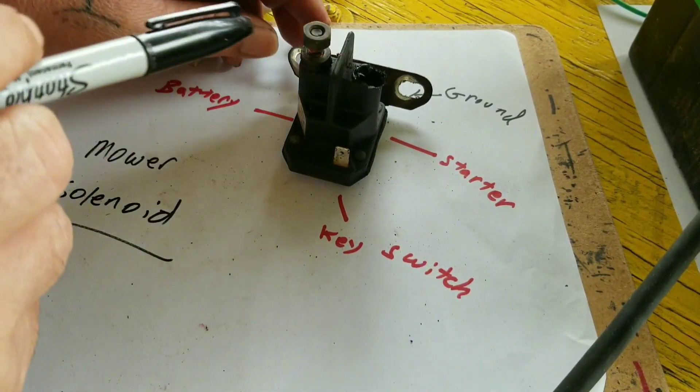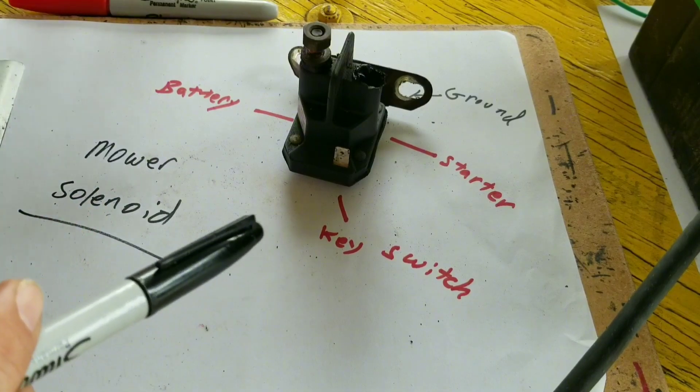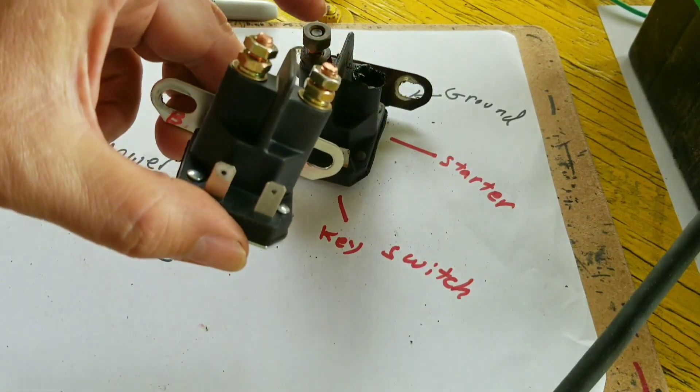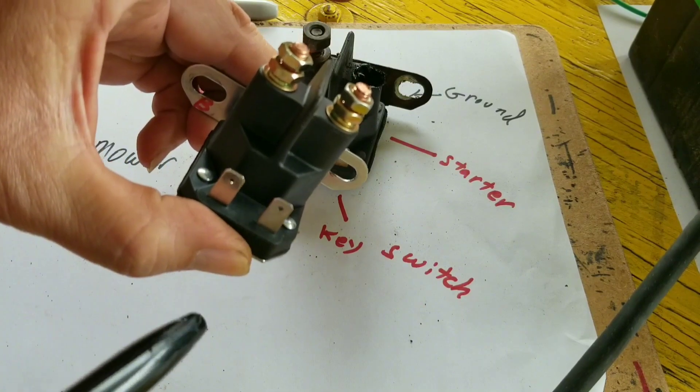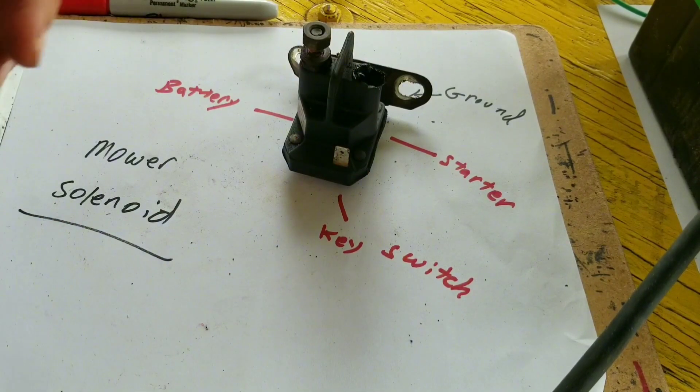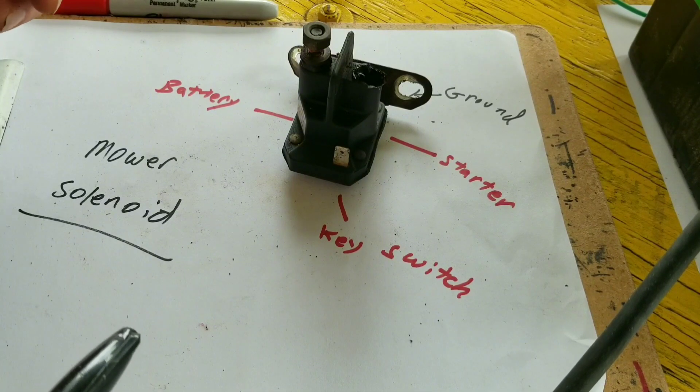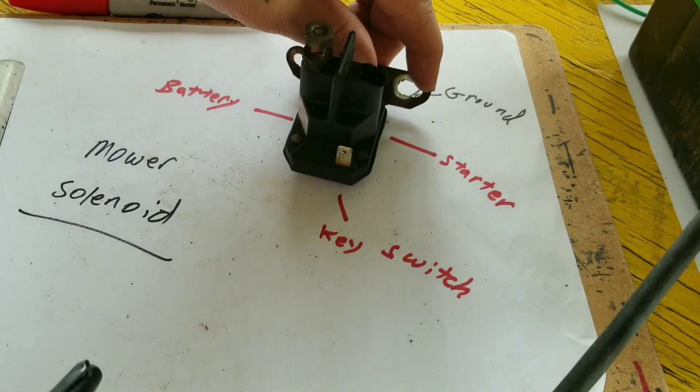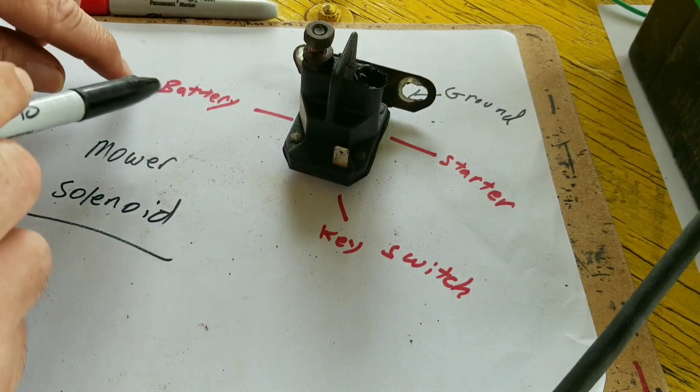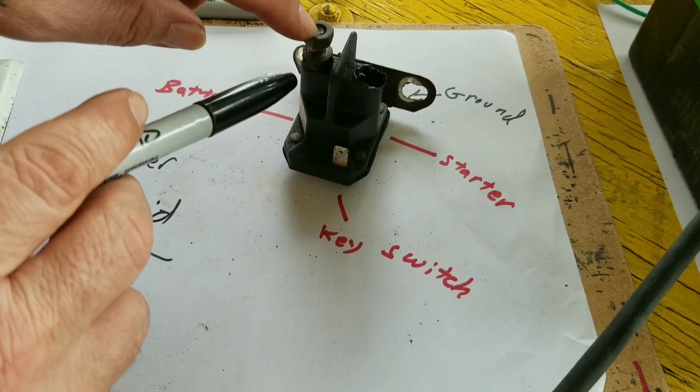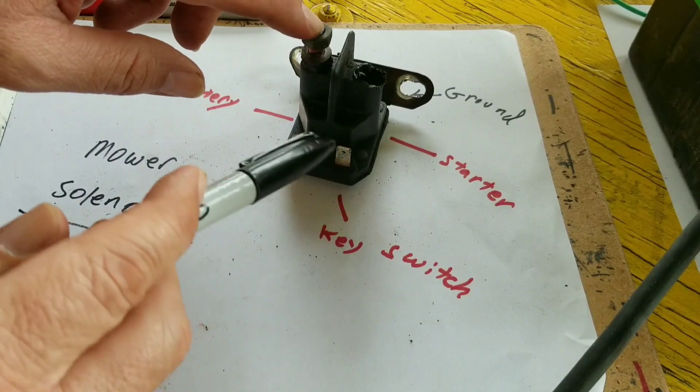Mine's a three pole solenoid - one, two, three. With the mower I ended up buying, they sent me the four pole solenoid - one, two, three, four - instead. It'll still work. I'm gonna show you how to get it going. It's real simple. This is the ground, and these are hot wires. Your battery wire is going to get hooked on this one, your starter wire on this one, and your key switch on here.